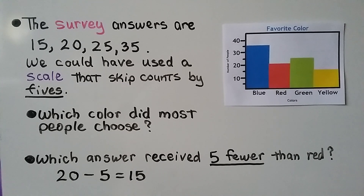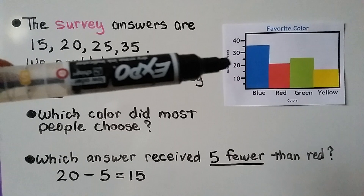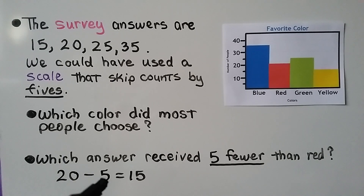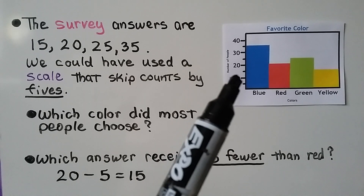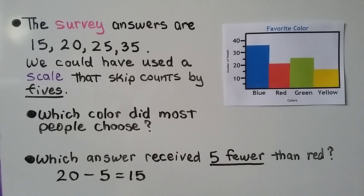Which answer received five fewer votes than red? We look for red — it's at 20. If we're looking for five fewer, that's a clue to use subtraction: 20 minus 5 equals 15. So which color had 15 as the number of answers? We look on the scale — 15 matches yellow. The answer is yellow.